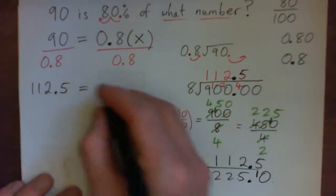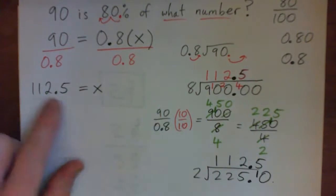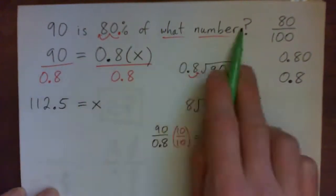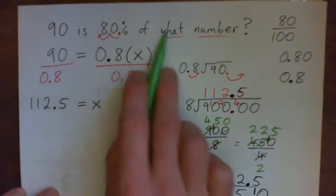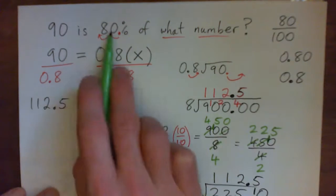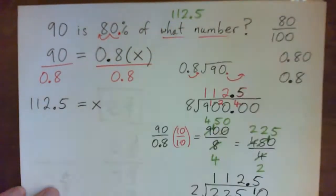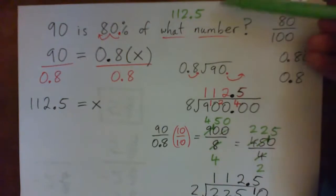But, regardless, the missing number should be 112.5. Now, does that make sense? Let's put that back into the original question. 90 is 80% of what number? 90 is 80% of 112.5. Does that make sense to you? That sentence? Does it seem reasonable?